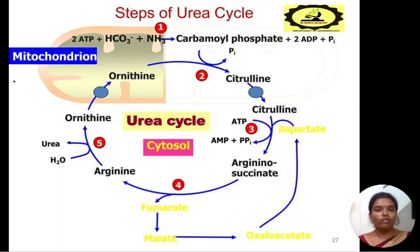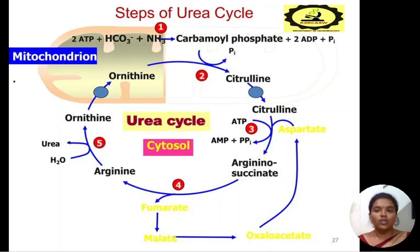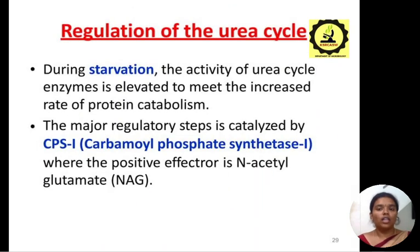In the urea cycle, 2 ATP plus HCO3 with ammonia gives carbamoyl phosphate plus 2 ADP plus phosphate. Citrulline is formed and, in combination with aspartate, forms argininosuccinate. This argininosuccinate by the release of fumarate gives arginine. Arginine then yields ornithine and urea. This cycle occurs in the mitochondria. Regulation of the urea cycle is increased during starvation. The activity of urea cycle enzymes is elevated to meet the increased rate of protein catabolism. The major regulatory step is catalyzed by CPS1, that is carbamoyl phosphate synthetase 1, where the positive effector is N-acetylglutamate.